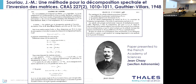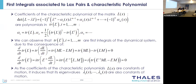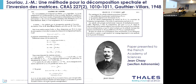It is also important to compute the characteristic polynomial of these matrices. I conclude with a beautiful 1947 paper in the Comptes Rendus de l'Académie des Sciences by Souriau — presented by Jean Chazy from the astronomy section — a one-page paper introducing what we call the Souriau algorithm to compute the characteristic polynomial of matrices.